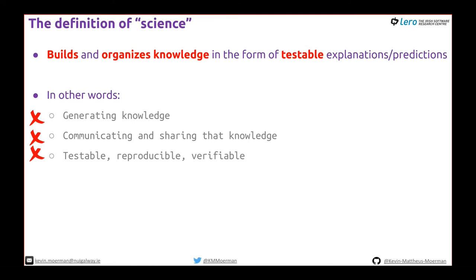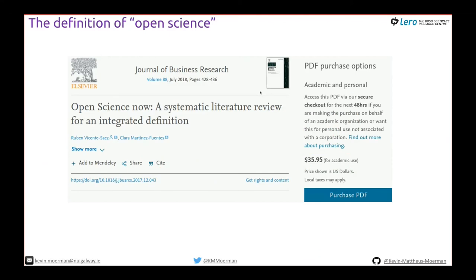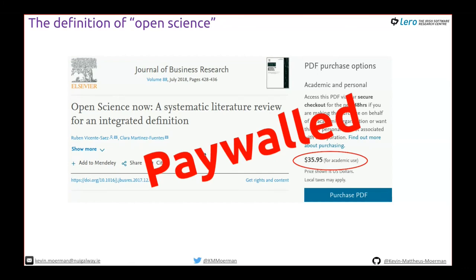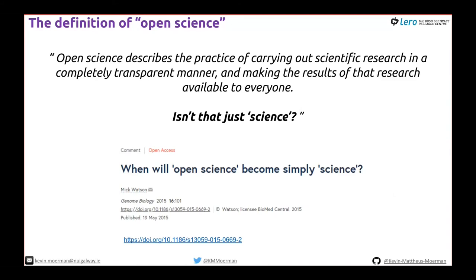Looking at Wikipedia's definition of science again: we're not really building and organizing knowledge very well, and it's not in a form that is testable. So what is the definition of open science? In short, open science describes the practice of carrying out scientific research in a completely transparent manner and making the results available to everyone. Then you could say — wait, isn't that just science? It should just be science.